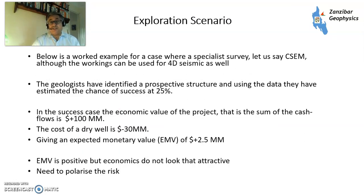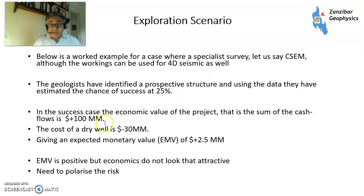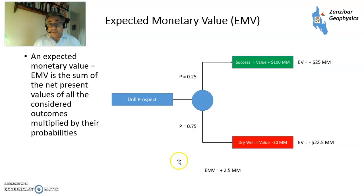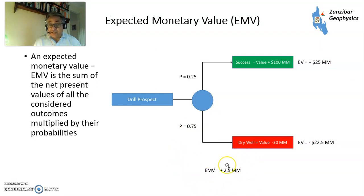So what has this got to do with oil exploration? Here's a worked example using controlled source electromagnetics — CSEM — though you can also apply it to 4D seismic and other techniques. A geologist has identified a prospect with a 25% chance of success, a value of success of $100 million, and a value of failure of minus $30 million, giving an expected monetary value of plus $2.5 million — which isn't very high. You have a success branch: 25% chance at $100M gives $25M expected; a failure branch: 75% chance at minus $30M gives minus $22.5M. Adding those together gives a total EMV of $2.5 million.